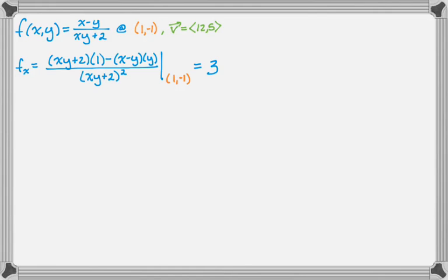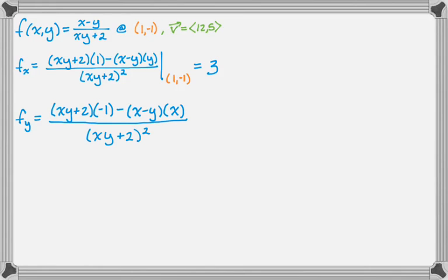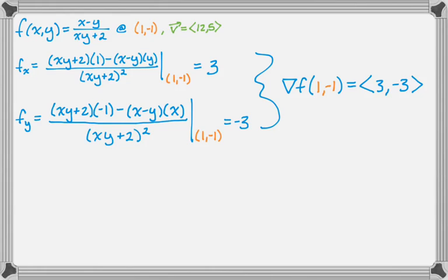Then we're going to find partial y, which is really similar, bottom derivative of the top, minus top derivative of the bottom, all over the bottom squared. And we need to evaluate that. So this is to find the gradient. That gives me -3, so I can combine those, and I now know that the gradient at (1, -1) is (3, -3).